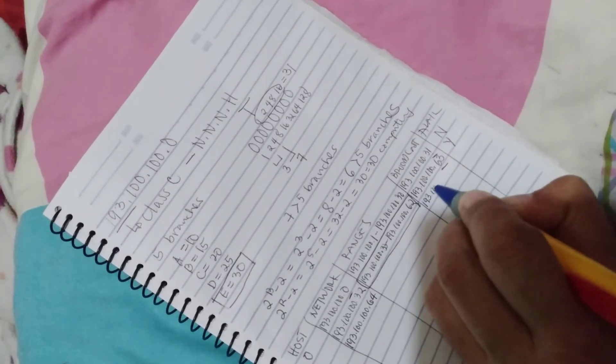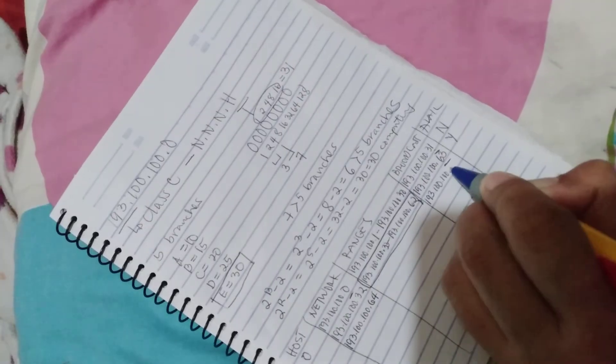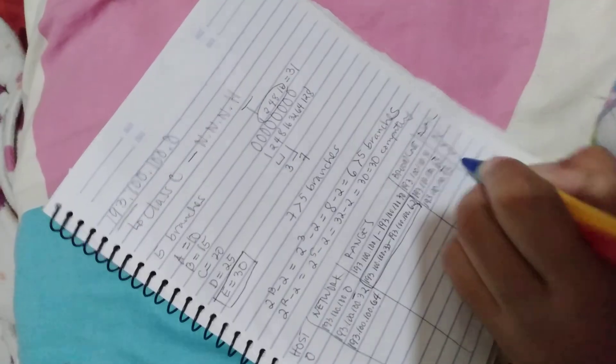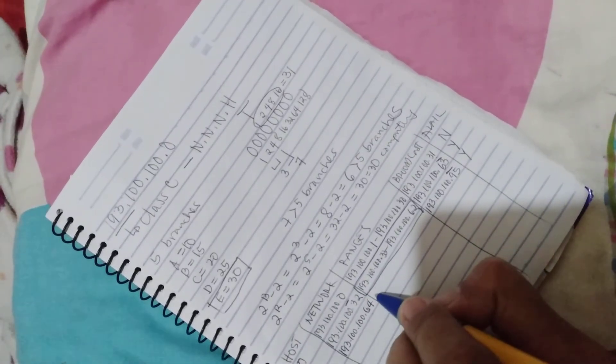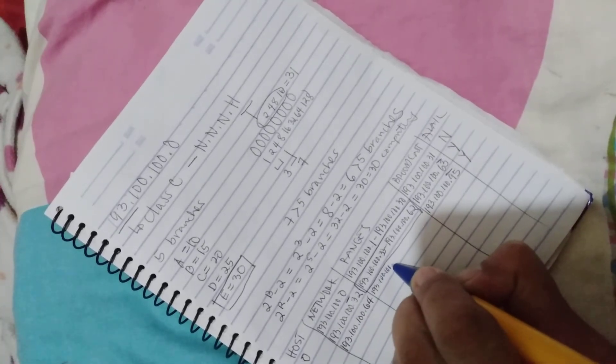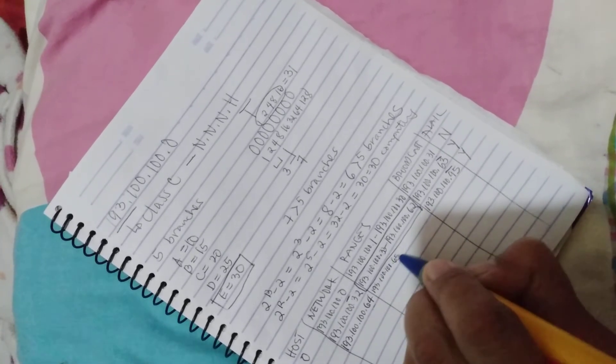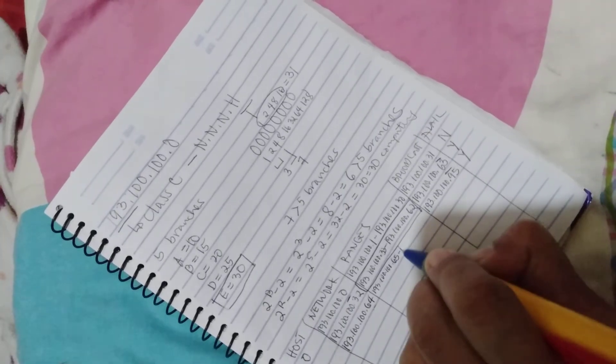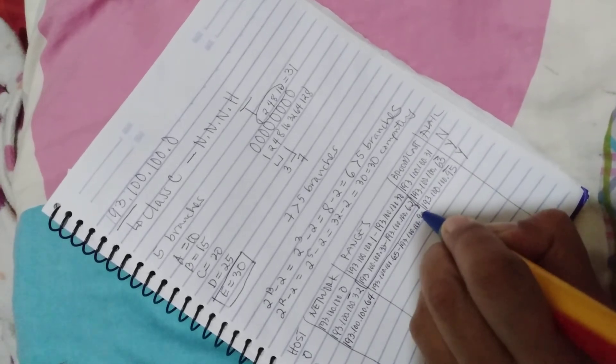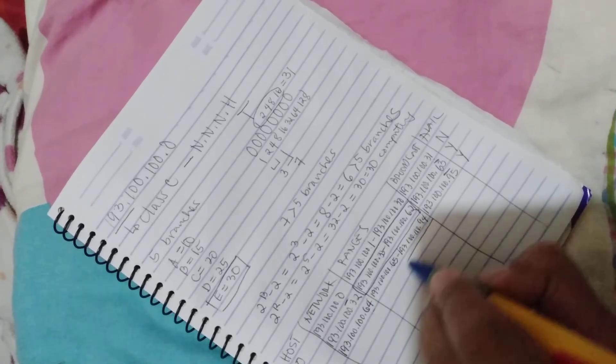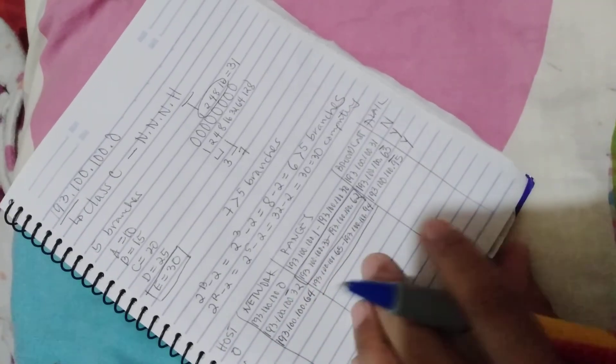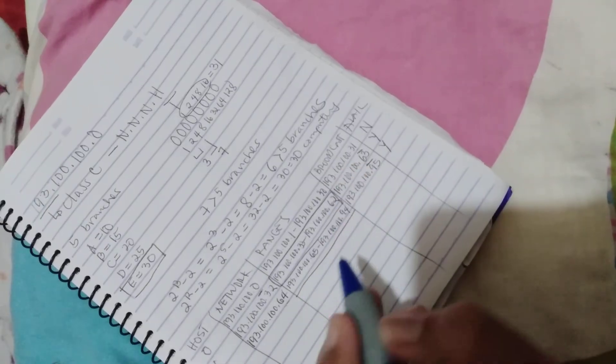So the next broadcast is 193.100.100.95, and this is also available for distribution. The ranges is 193.100.100.65 up to 193.100.100.94, and these ranges are for branch B. You will continue the table until you reach the last broadcast IP address.